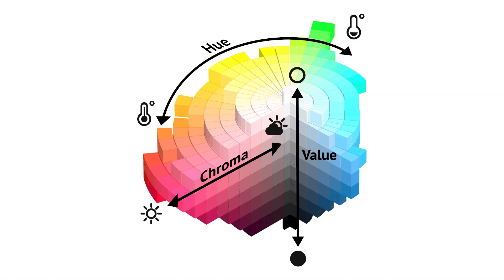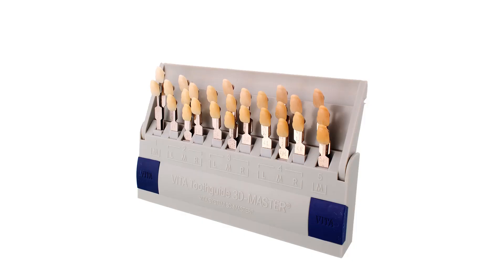So we have value, which is light to dark. We have chroma, which is the intensity of the color. The third component is what we call hue — the color itself. Is it more yellow or is it more red, when we're talking about teeth? Nowadays when we take shades, we use shade guides that allow us to separate those three components to get an accurate shade. Before I show you shade guides and get into that aspect, let's talk about technique for taking shades.